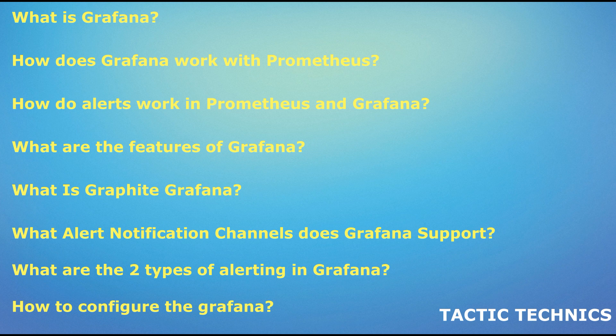What is Grafana Cloud? Grafana Cloud is an observability platform integrating metrics, tracing, and logging with the help of Grafana. It is the best open-source observability software that consists of Prometheus, Loki, and Tempo without requiring you to install, maintain, and scale your own observability stack.